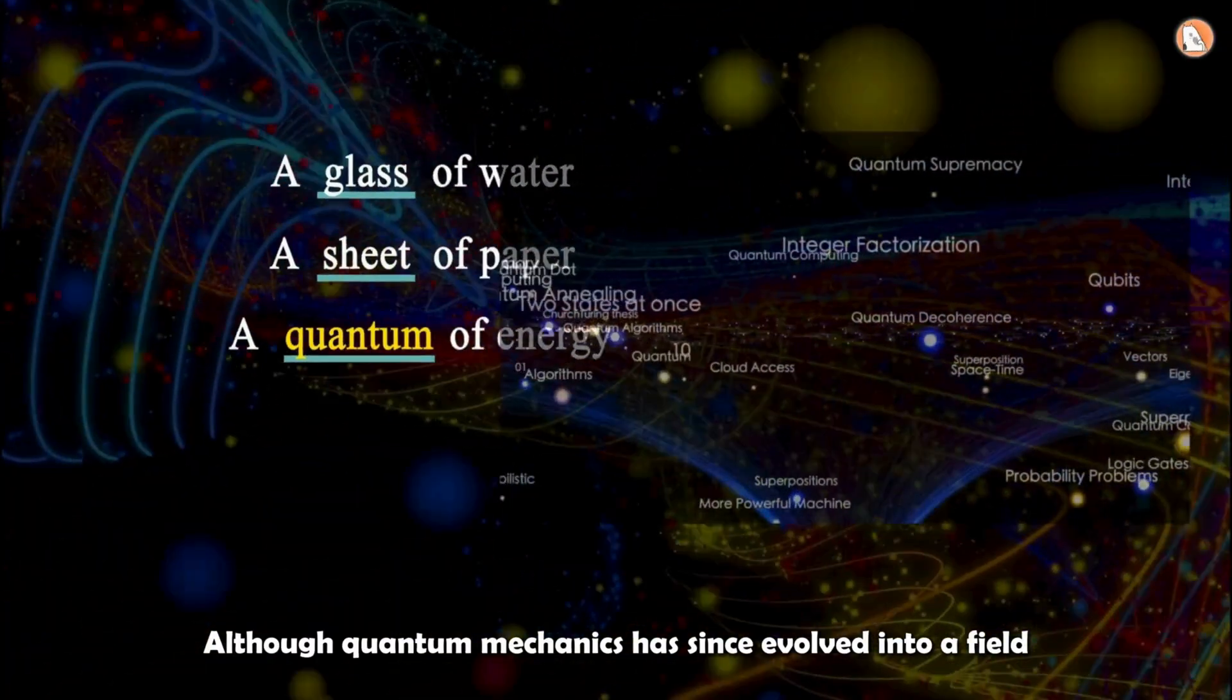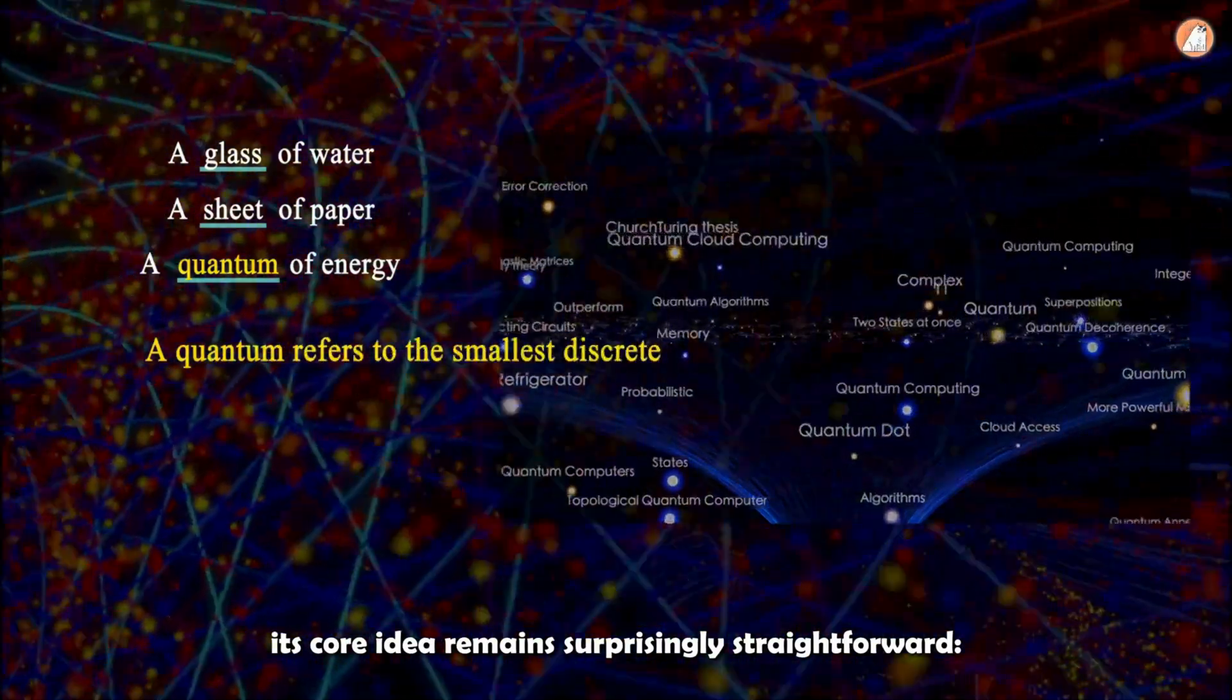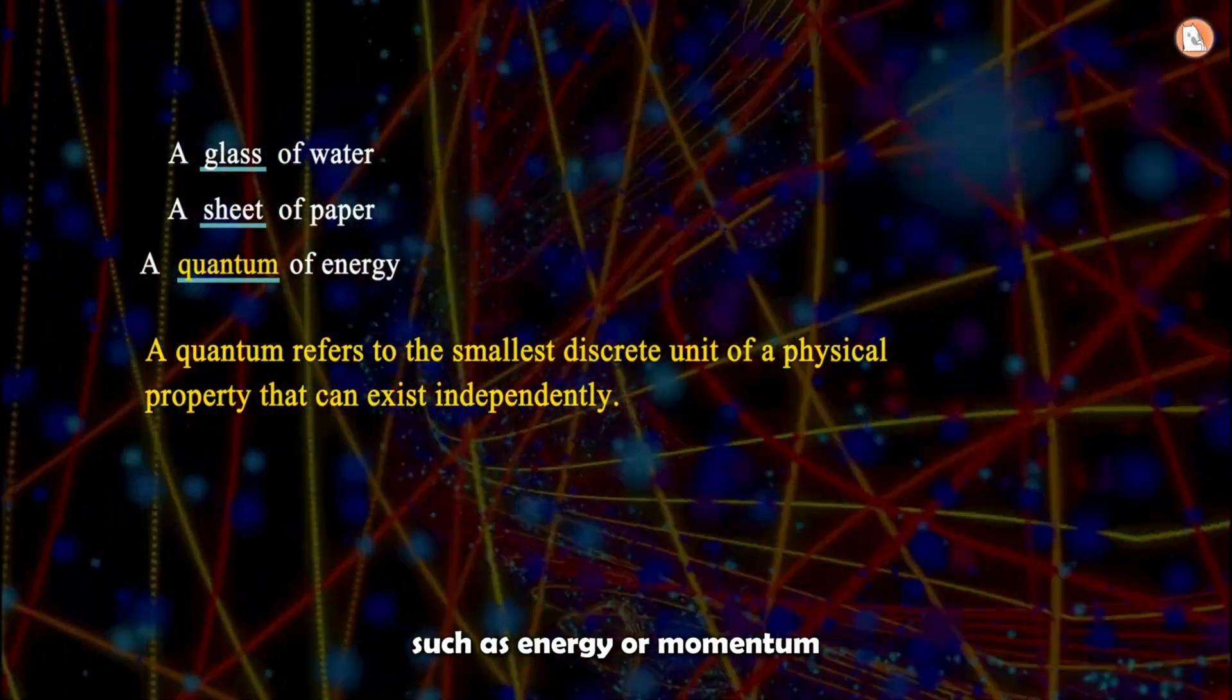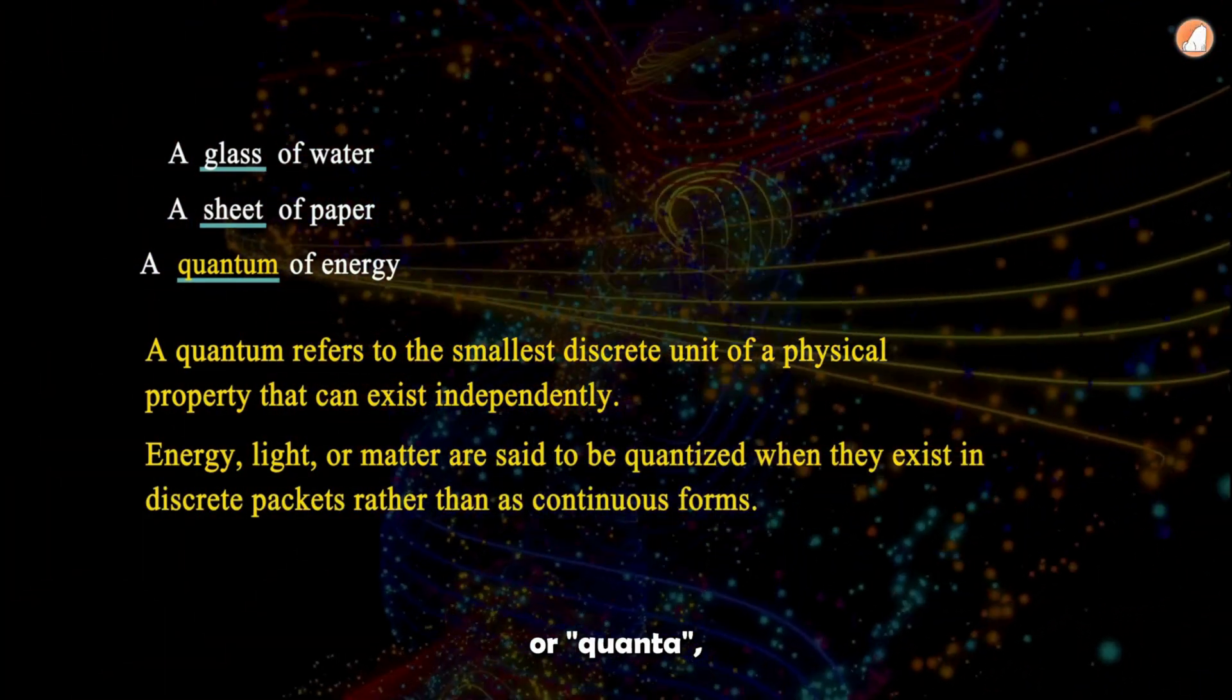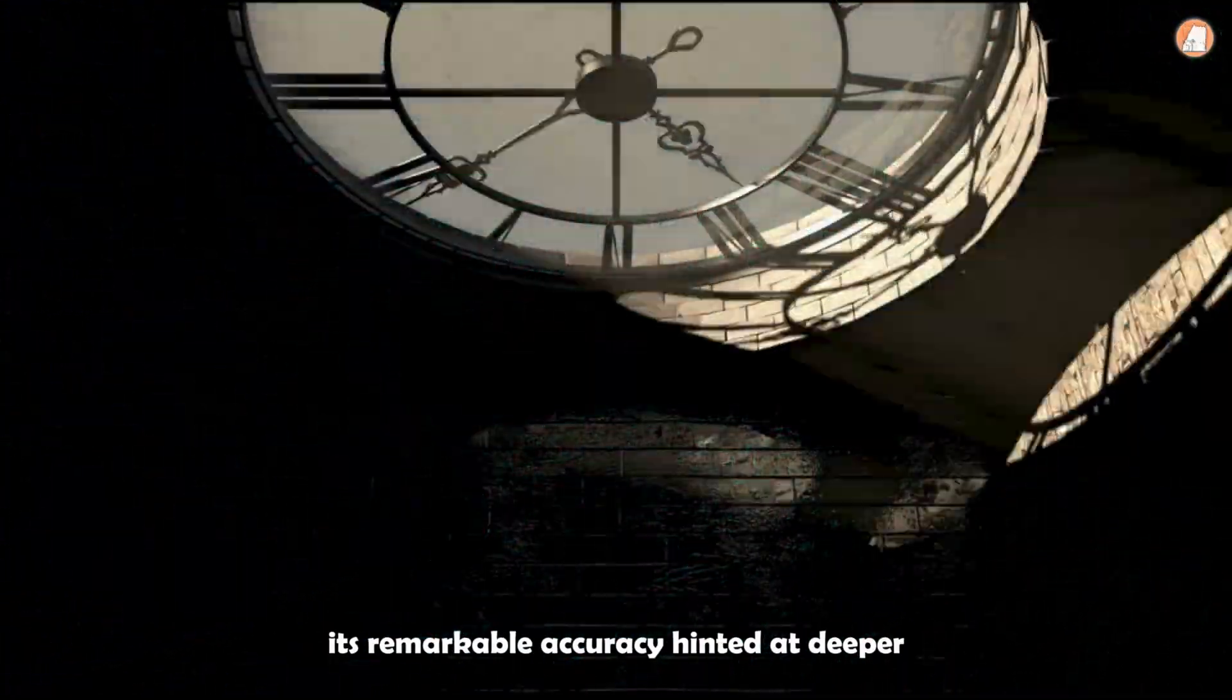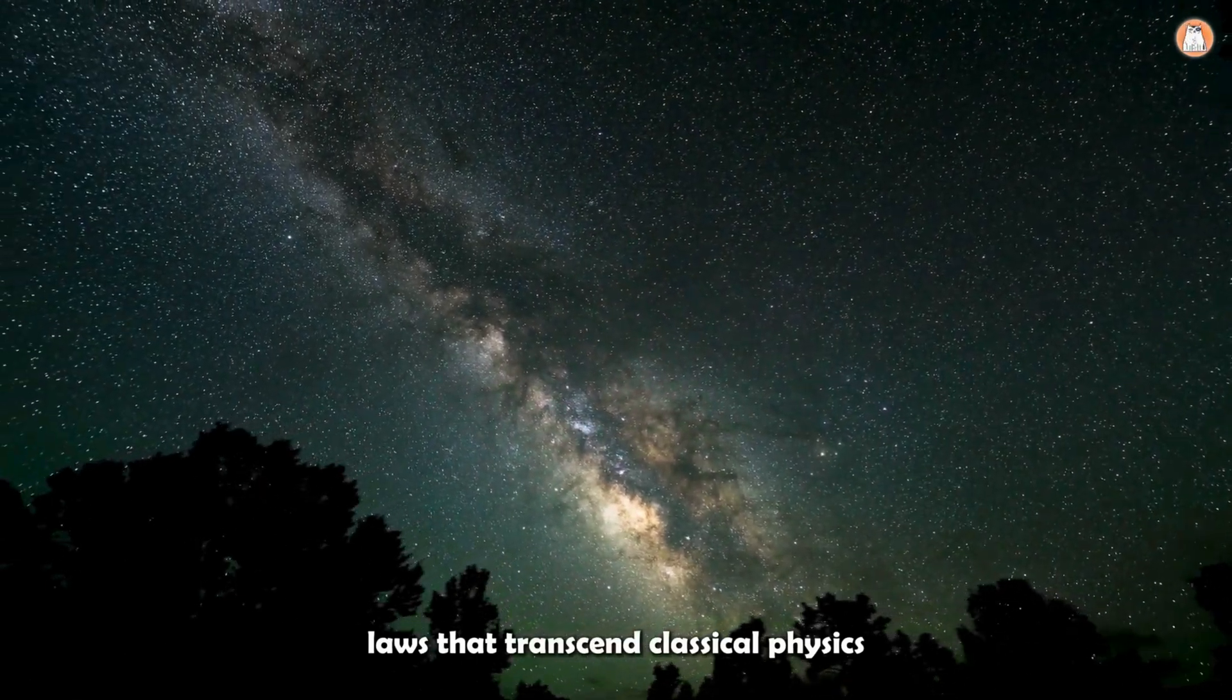Although quantum mechanics has since evolved into a field filled with complex theories and mathematical frameworks, its core idea remains surprisingly straightforward. Many seemingly continuous physical quantities, such as energy or momentum, are at their core composed of discrete units, or quanta, at the microscopic level. Although Planck's solution began as a mere hypothesis, its remarkable accuracy hinted at deeper objective laws still unknown, laws that transcend classical physics.